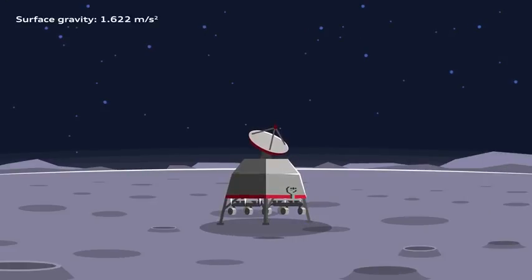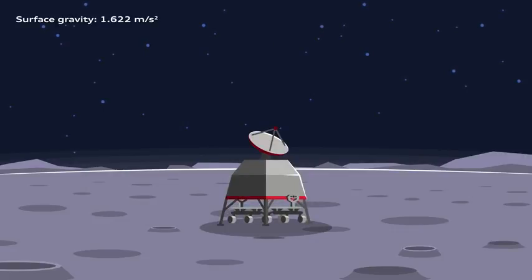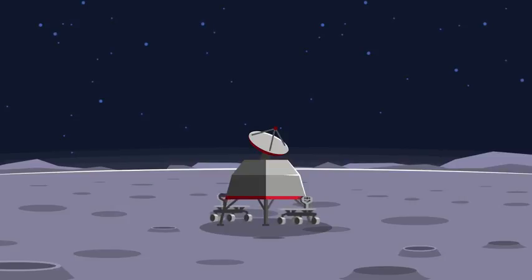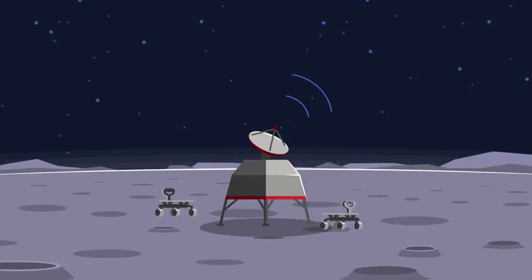Once Alina has touched down safely on the moon, it establishes a communications link with Earth. It then releases the two rovers, which connect to Alina via an LTE base station built with the help of Vodafone. This allows data from the rovers to be relayed down to Earth via Alina.